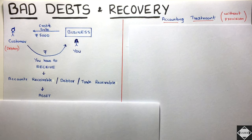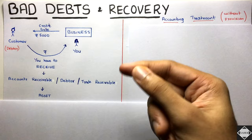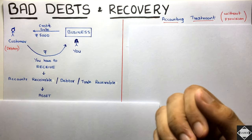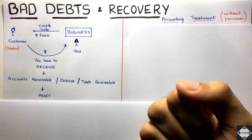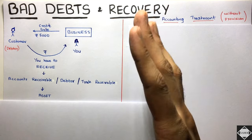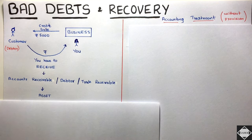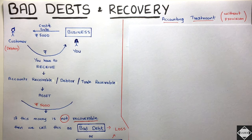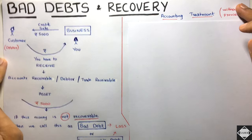Now let's say many months have passed and we are not getting payment from this customer. We then get to know that this customer has gone bankrupt — he doesn't have money, so he will not pay us. From the accounting point of view, you have bad debts of 5000. This money is irrecoverable — you are never going to get it. This is your bad debt, your loss, also known as irrecoverable debt.